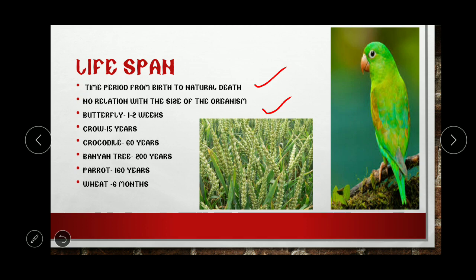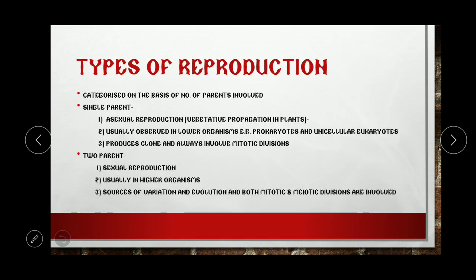For example, butterflies have a lifespan of one to two weeks, a crow has a lifespan of 15 years, and a parrot has a lifespan of 160 years. As you can see, both crow and parrot have approximately the same size and both belong to class Aves — that is, birds — however there is a huge difference between their lifespans. So the size and lifespan have no relation.